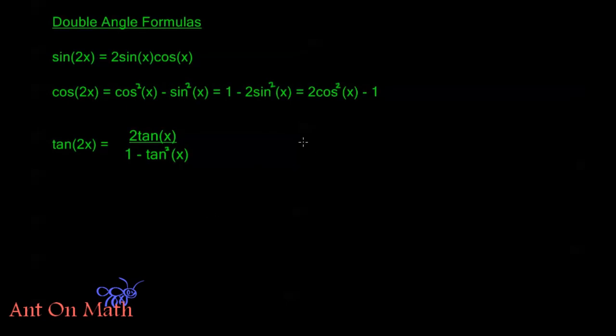We have that sine of 2x equals 2 sine x cosine x. Cosine of 2x is cosine squared x minus sine squared x, or 1 minus 2 sine squared x, or 2 cosine squared x minus 1. This cosine 2x has three different forms that are all equivalent, but some will come in useful at different times. And tangent of 2x is 2 tangent x over 1 minus tangent squared x.